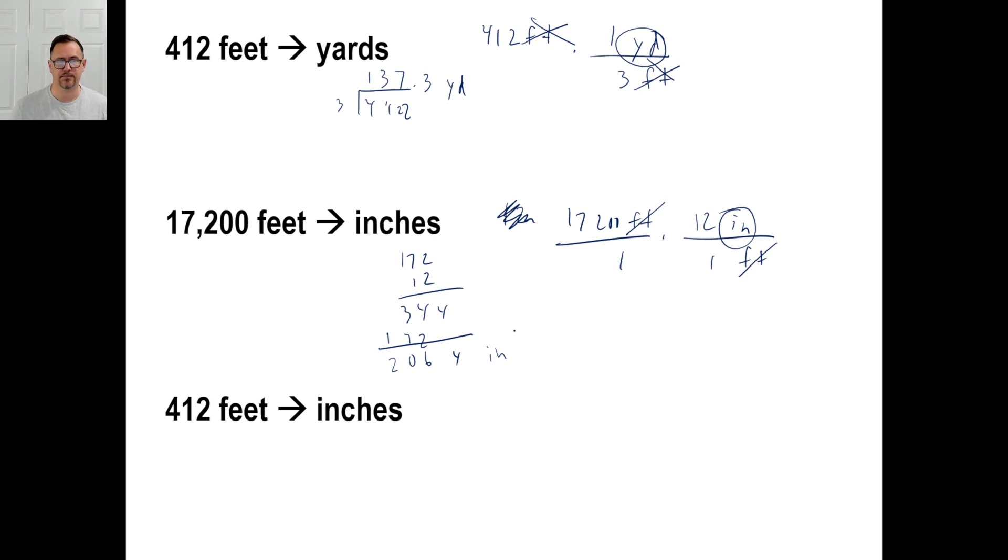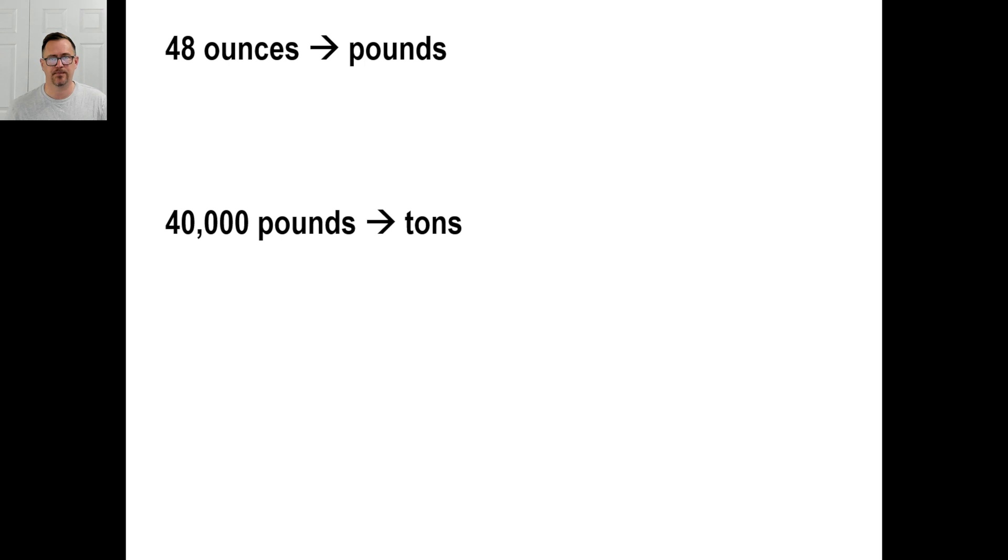Pause it and try C. 412 feet to inches. So, it's like this first one but a little different. We're still going to write 412 feet. We know immediately we just need to put feet down here. Now, we're looking for inches, right? So, we go, well, 1 foot is the same thing as 12 inches. Now, we can cancel the feet. Then, we just have 412 times 12 which gives us 4,944 and that is inches. And there you go.